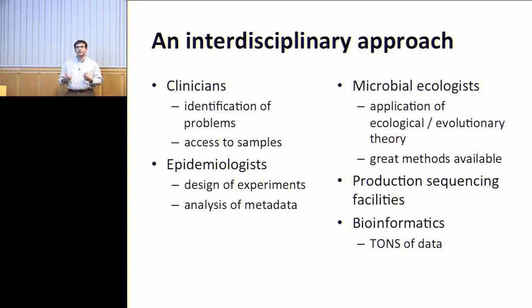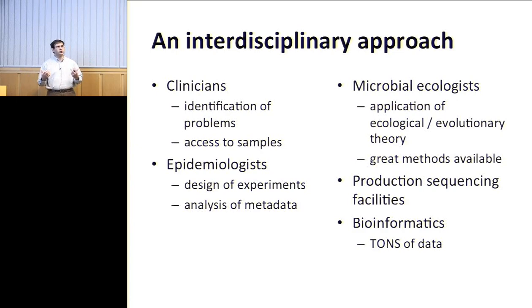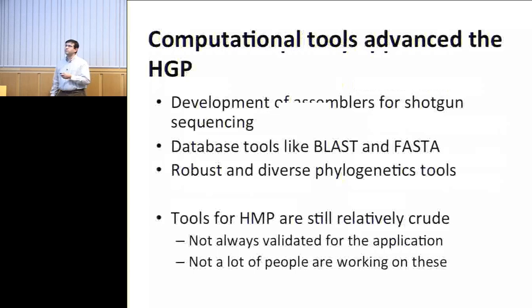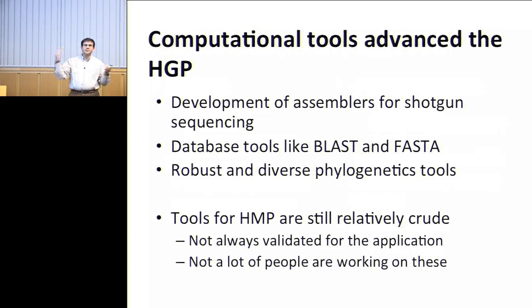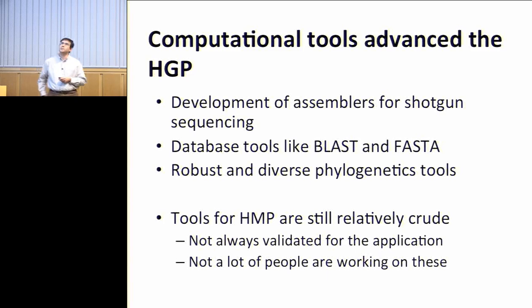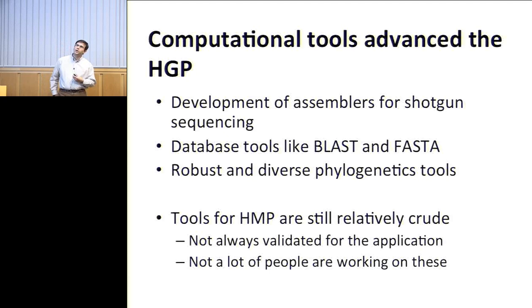In Human Microbiome Project we make parallels to the Human Genome Project. For the Human Genome Project to succeed, it really needed great computational tools — development of assemblers for shotgun sequencing, database tools like BLAST and FASTA, and phylogenetic tools. A lot of the computational tools we use for the Human Microbiome Project are still relatively crude and not always validated for what we're doing. To their credit, NHGRI sequenced a number of model organisms like E. coli and C. elegans. The genes those organisms have tell us a lot about genes in the human genome, but the first version of the Human Microbiome Project ignored a lot of these model systems.